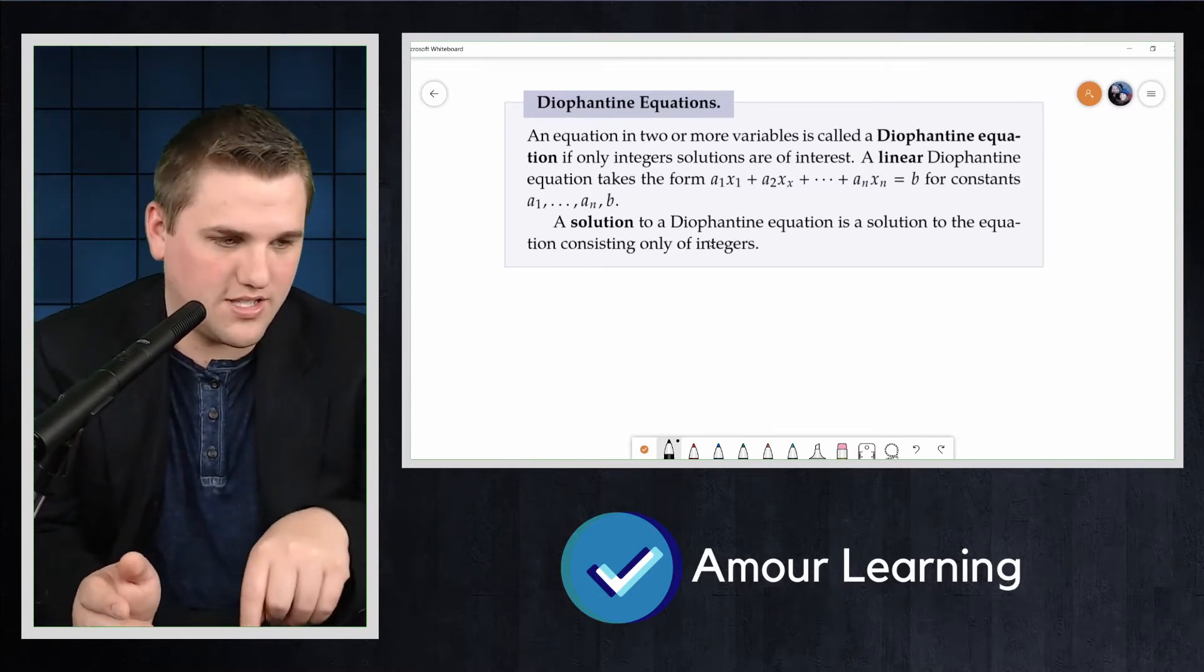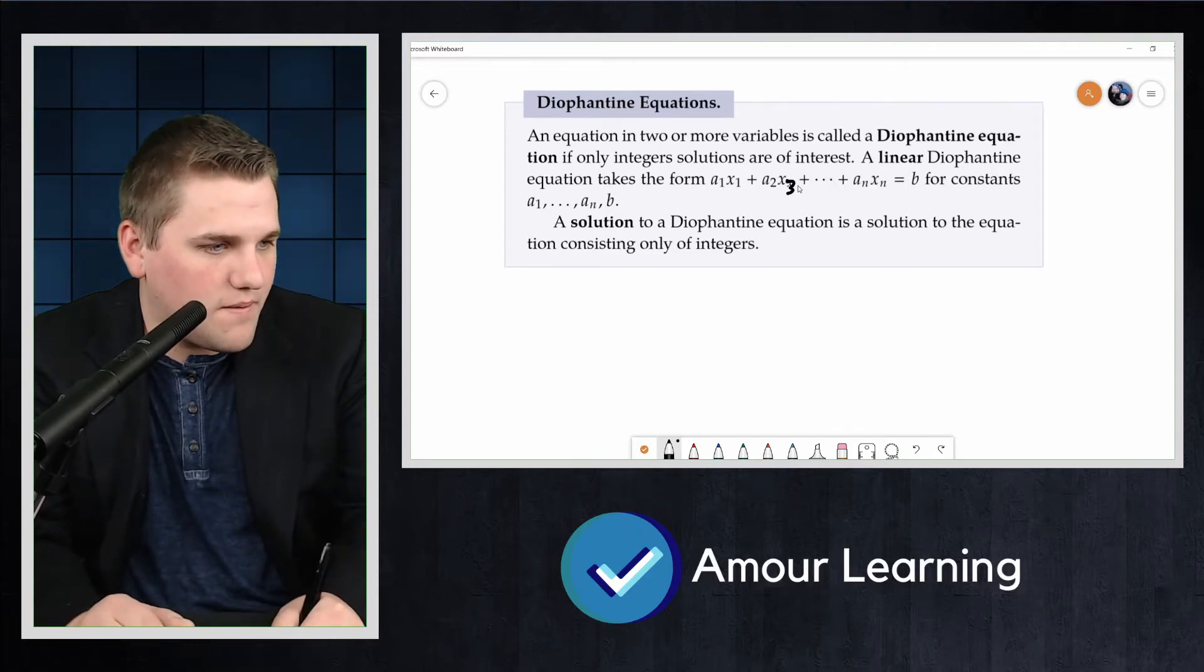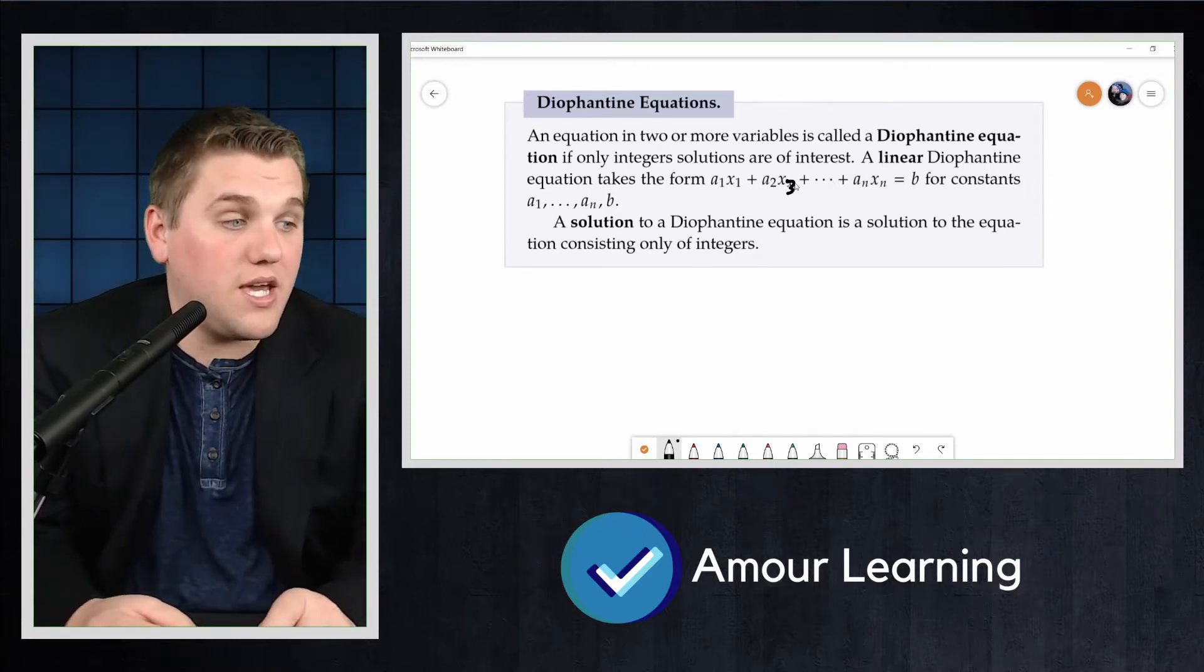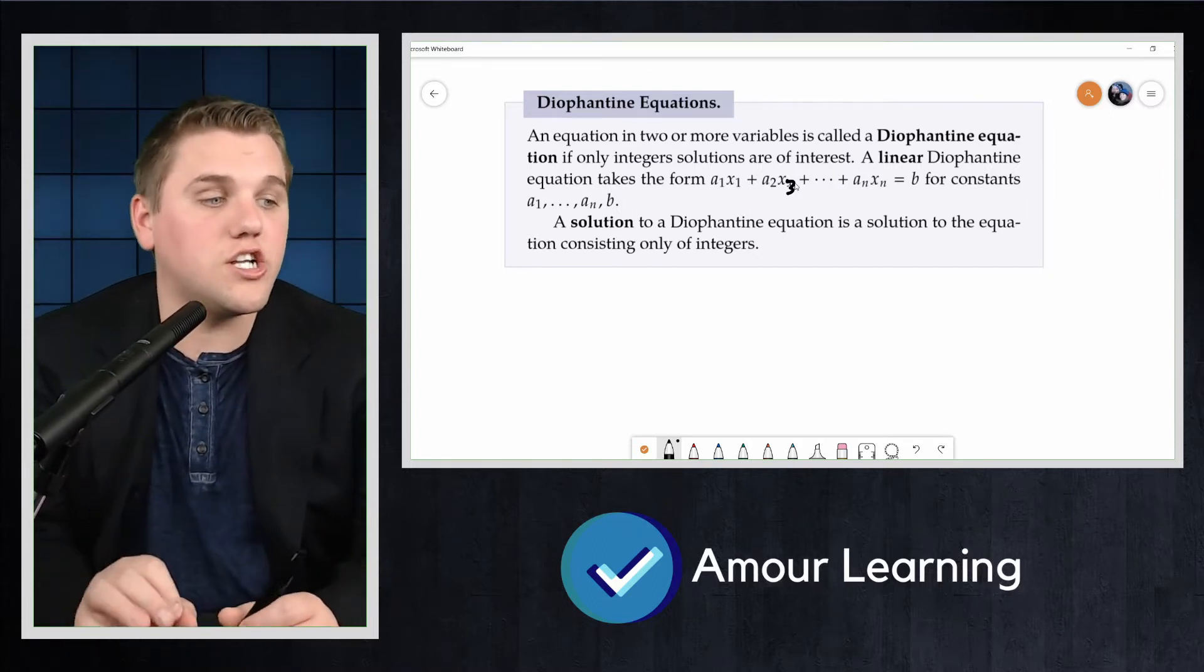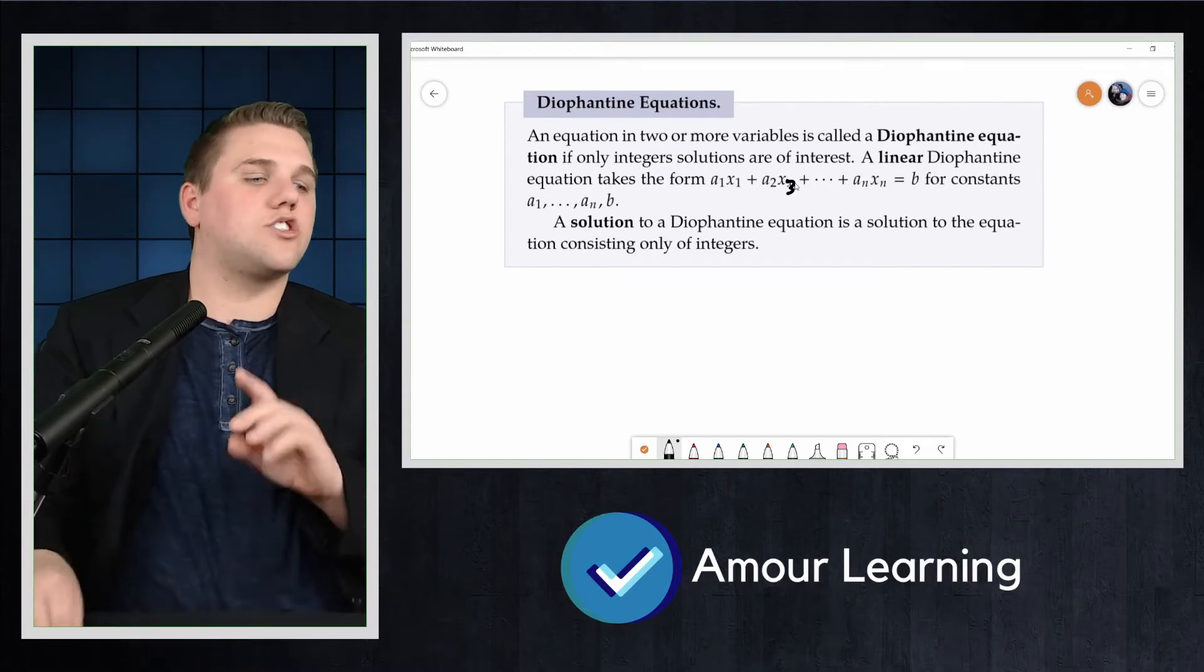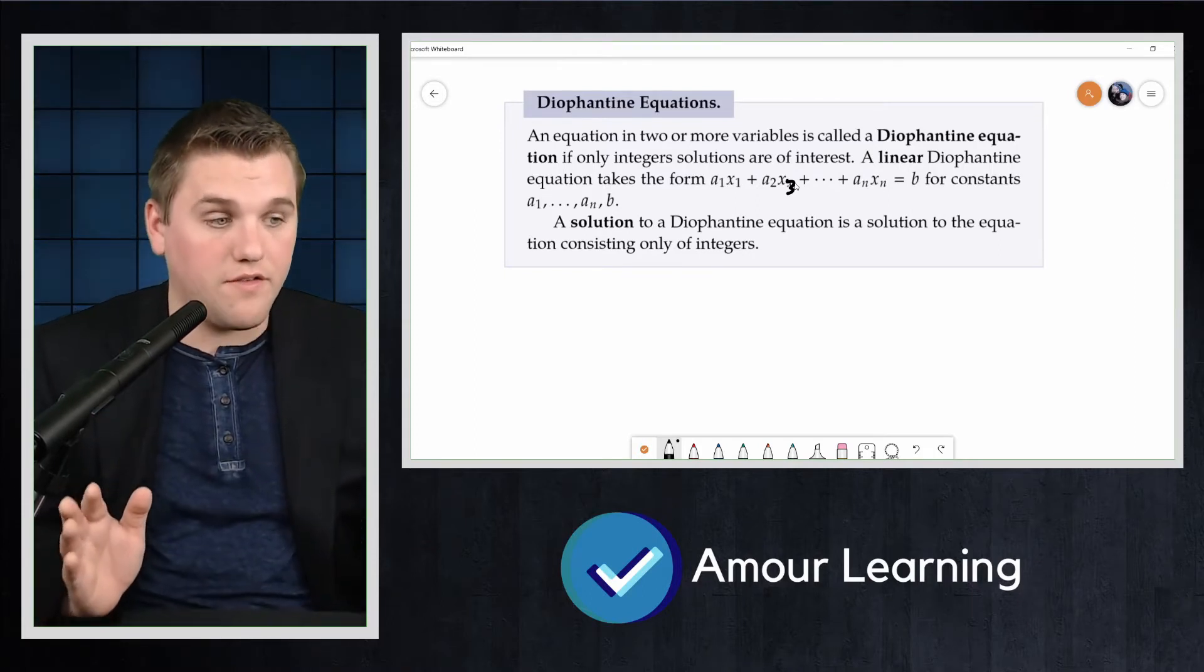That should be a3 here, so that's my mistake there. Equals b for constants a1 all the way up to an and b. A solution to a Diophantine equation is a solution to the equation consisting only of integers.